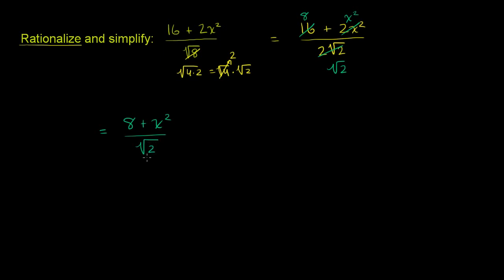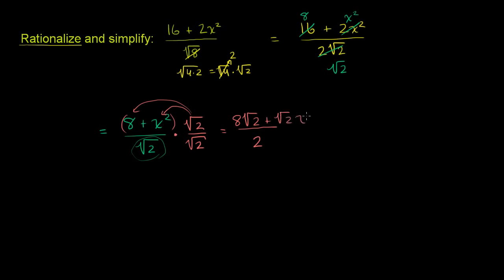Now let's rationalize this. The best way to get this radical out of the denominator is to multiply the numerator and the denominator by the principal square root of 2. So times the principal square root of 2 over the principal square root of 2. In the denominator, the square root of 2 times the square root of 2 is just 2. In the numerator, we distribute: 8 times the principal square root of 2 plus the square root of 2 times x squared, all over 2. We can consider this done. Or if you want, you could break it up: 8 square roots of 2 over 2, which is 4 square roots of 2, plus square root of 2 over 2 times x squared. Both forms are equally valid.